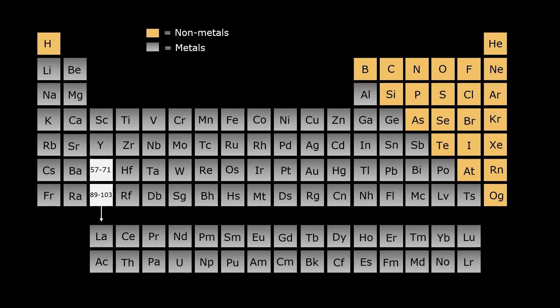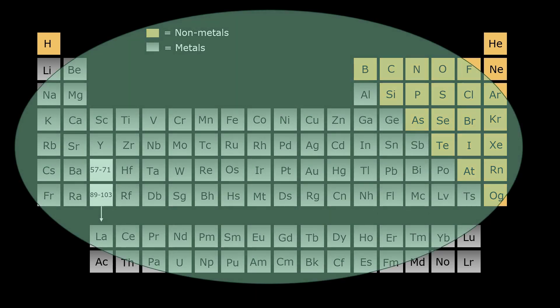This is why organic chemistry primarily focuses on this specific region of the periodic table. In contrast, inorganic chemistry encompasses the entire periodic table, including non-metals and metals.